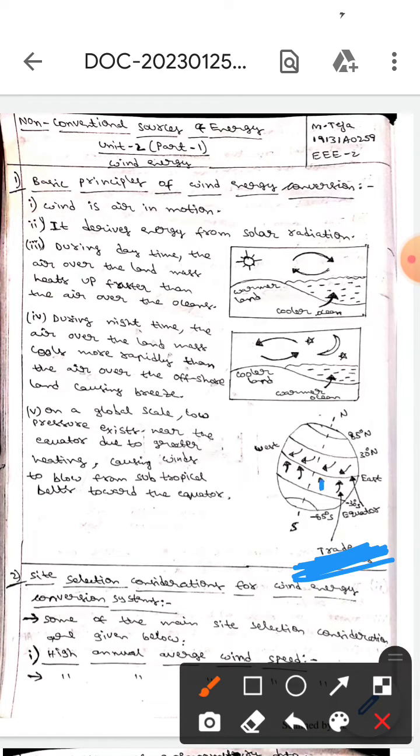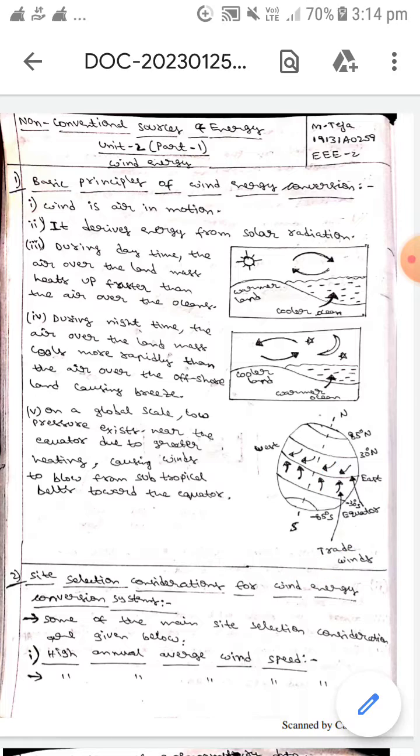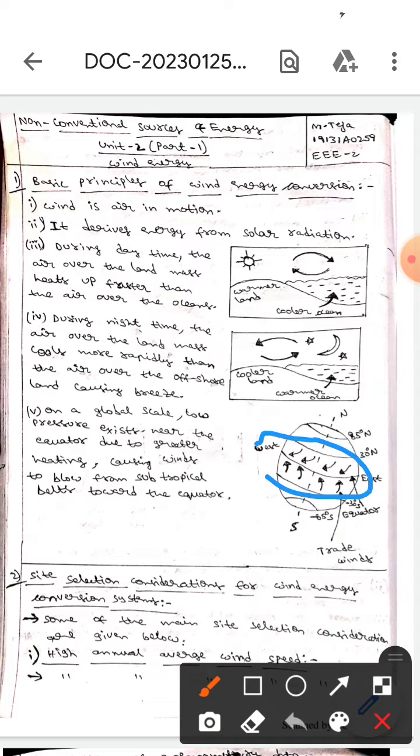If you observe here, they will flow towards the equator. We can see the wind is flowing towards the equator from subtropical belts.